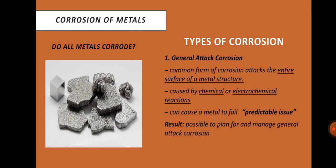Types of Corrosion: There are many different reasons for metal corrosion. Some can be avoided by adding alloys to a pure metal. Others can be prevented by a careful combination of metals or management of the metal's environment. First is general attack corrosion. This very common form of corrosion attacks the entire surface of a metal structure. It is caused by chemical or electrochemical reactions. While general attack corrosion can cause a metal to fail, it is also known as a predictable issue, and it is possible to plan for and manage it.